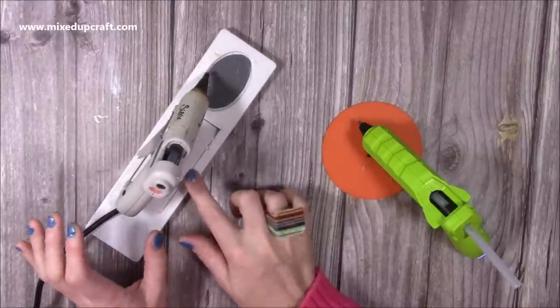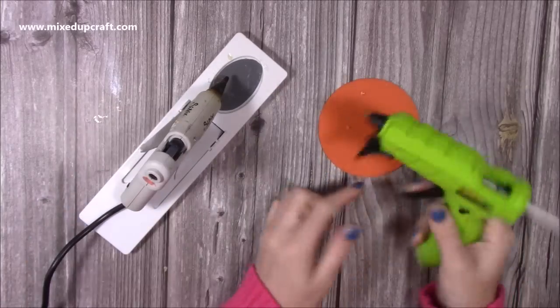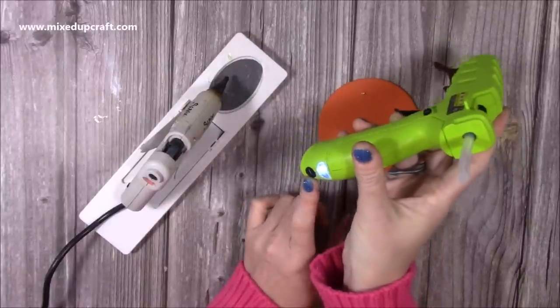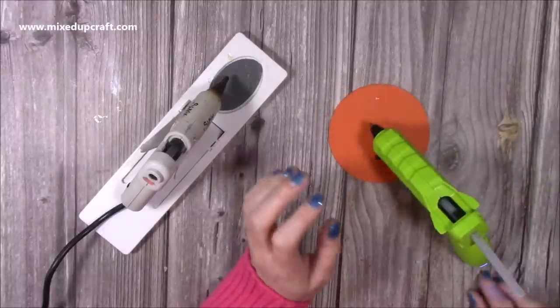So no matter what glue gun you've got, if you don't have a stand and you want to get one, then get one of these because they're great. Now this one here I picked up from Amazon. It's obviously heating up now, it's nice and hot, so it's got a USB to charge it. You get this little silicone mat just for any bits that do drip, but I find it doesn't drip.